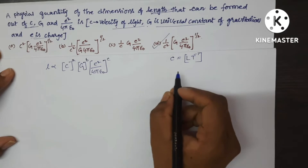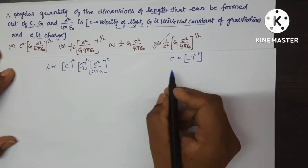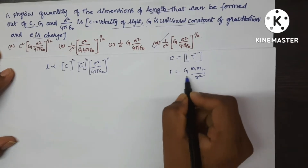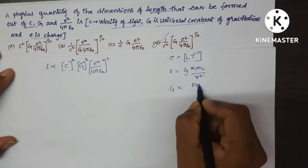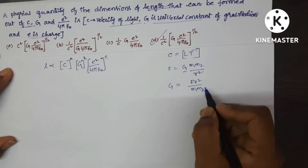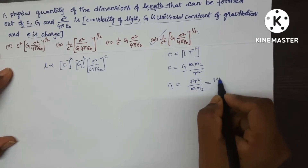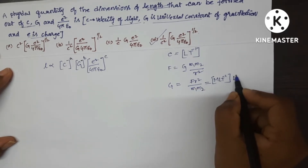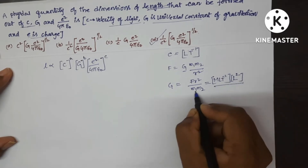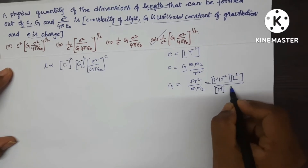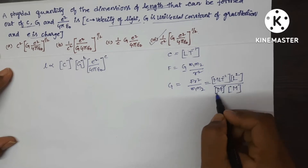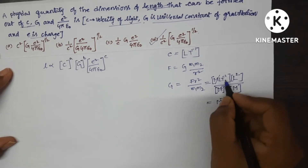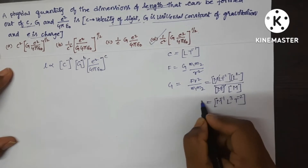G is the universal constant of gravitation. Write the formula for gravitational force: F = G·M₁M₂/R². So G = F·R²/(M₁M₂). The dimensions of force are M L T⁻², R is distance so L², and M₁, M₂ are both M. M and M cancel, leaving M⁻¹ L³ T⁻². This is the dimensional formula of G.